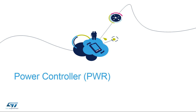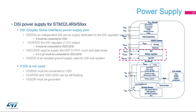The STM32L4R9 and STM32L4S9 devices feature the DSI, or Display Serial Interface, subsystem, and it uses several power supply pins independent from other supply pins: VDD-DSI, VCAP-DSI, and VDD12-DSI. If the DSI peripheral is not used, VDD-DSI must be connected to VDD, while VCAP-DSI and VDD12-DSI can be left floating.